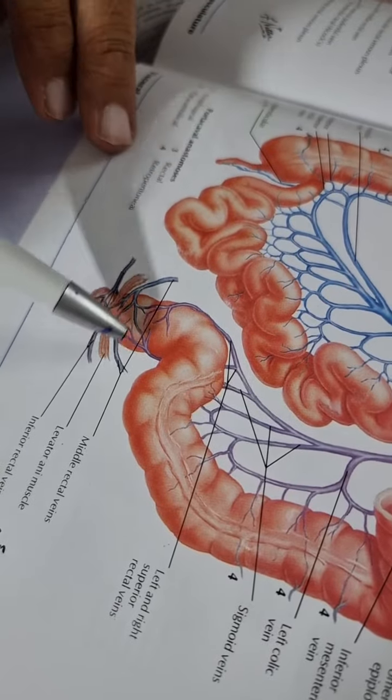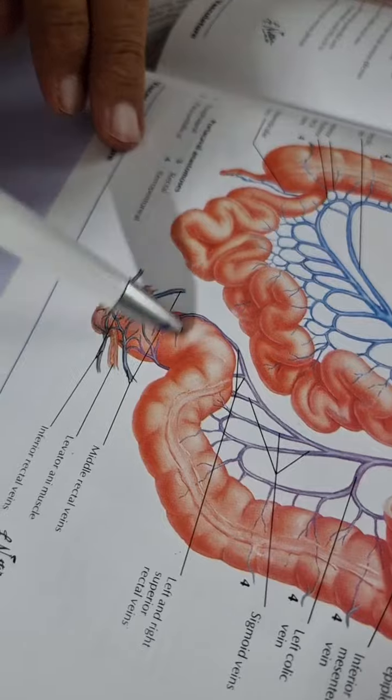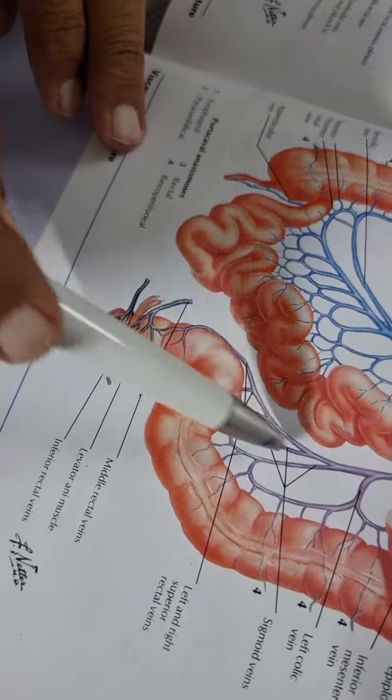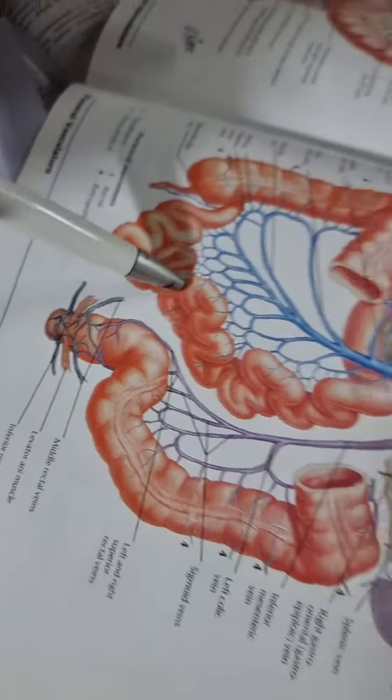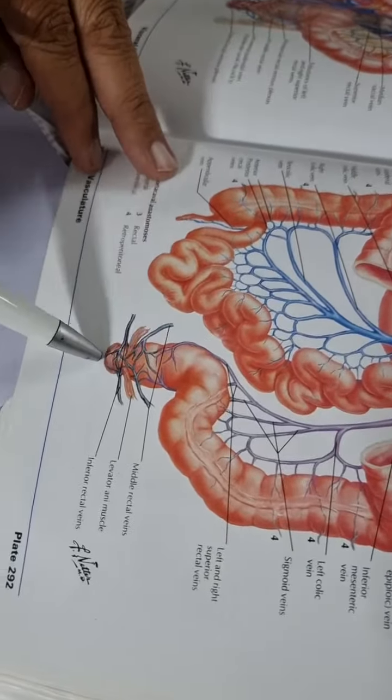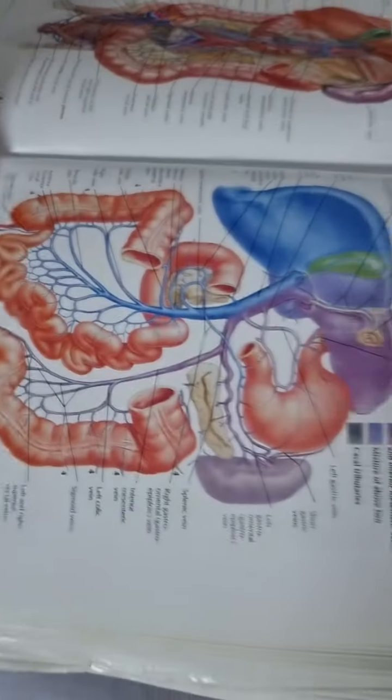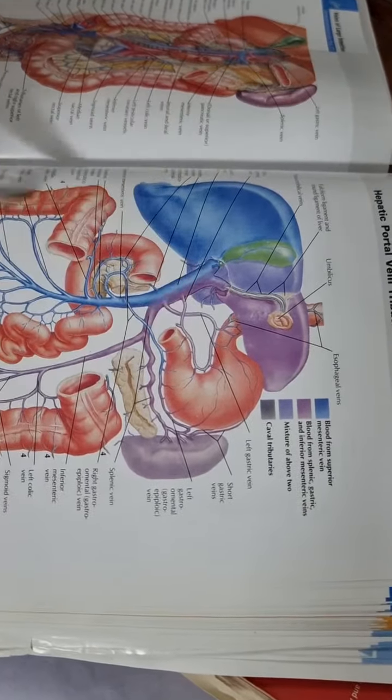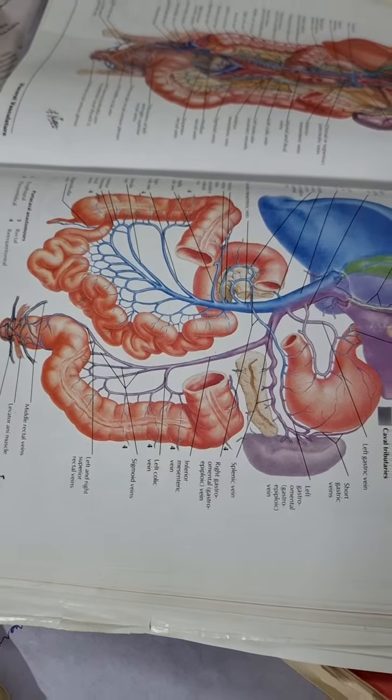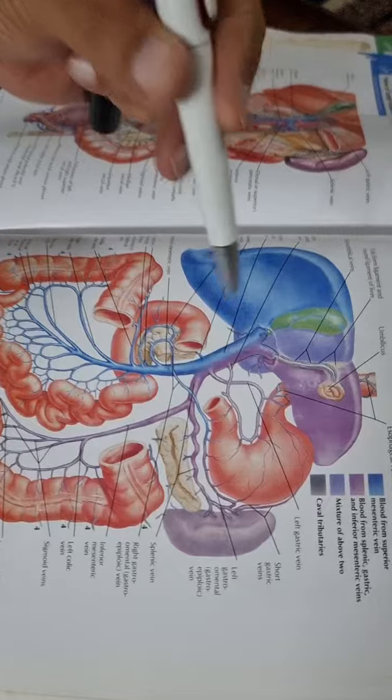The upper part of the rectum and all the GIT except this inferior part of the anal canal and rectum and the upper part, the thoracic part of esophagus, this is all being drained by the portal vein.